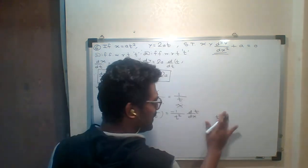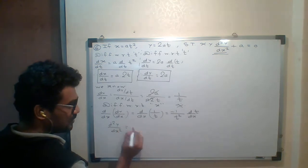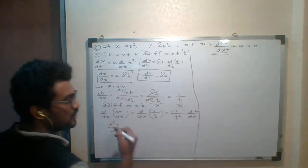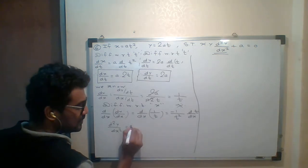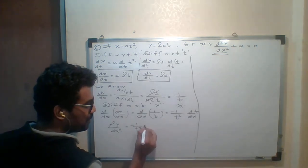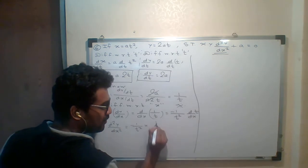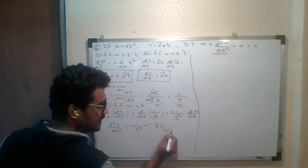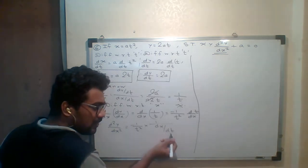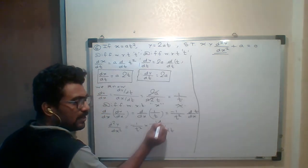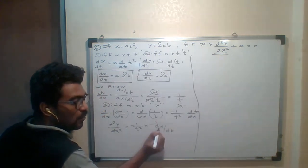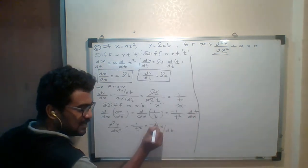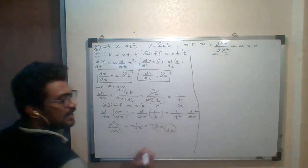So the answer in the next step is minus 1/t² multiplied by dt/dx. Now, dt/dx is the same as 1 divided by dx/dt — the denominator of the denominator comes to the numerator. So dt/dx equals 1 upon dx/dt.